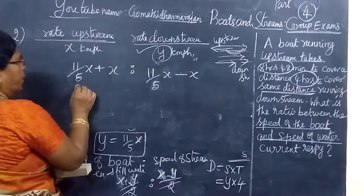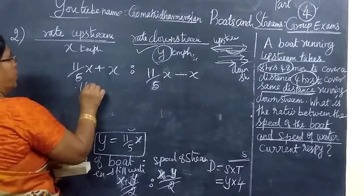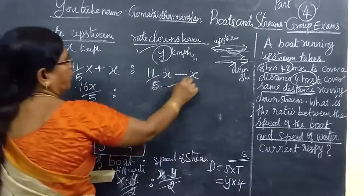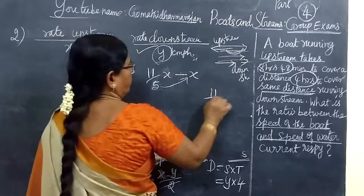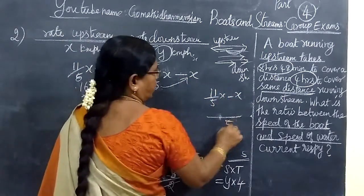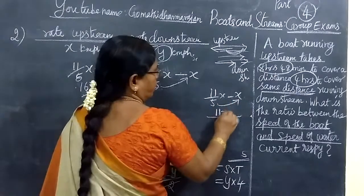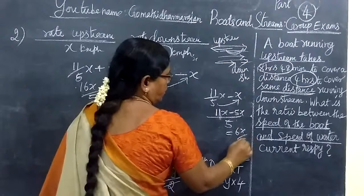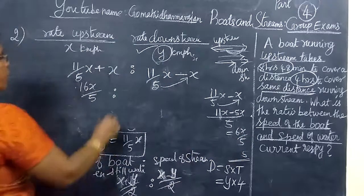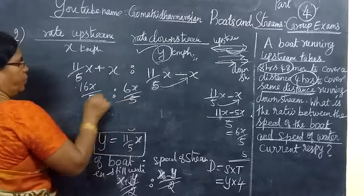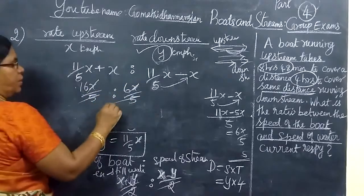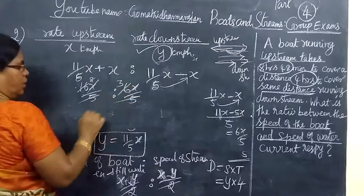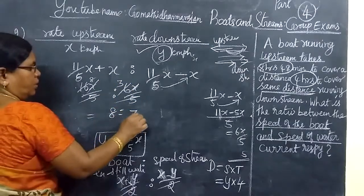Writing with LCM: (11/5 + 1) : (11/5 − 1). Cross-multiplying gives (11X + 5X) / 5 : (11X − 5X) / 5 = 16X/5 : 6X/5. The 5s cancel, giving 16 : 6. Simplifying by dividing by 2, the final answer is 8 : 3.